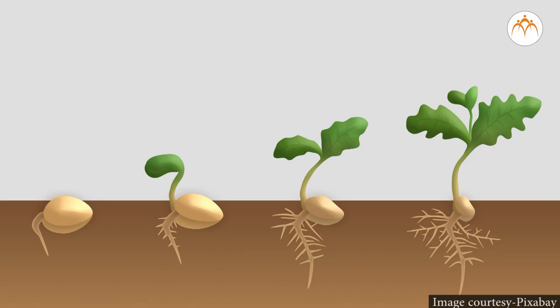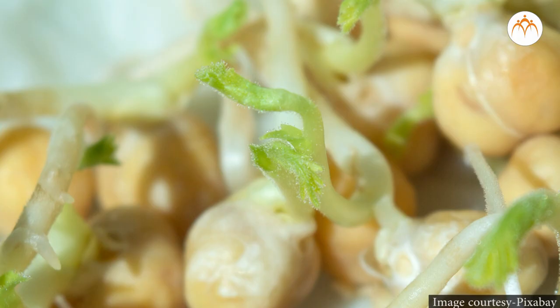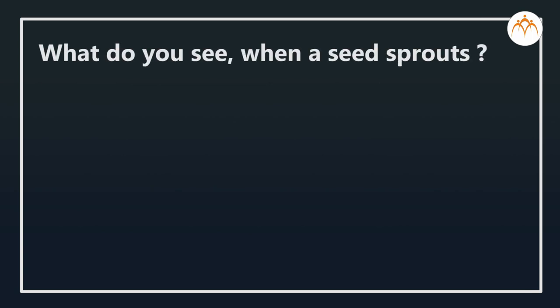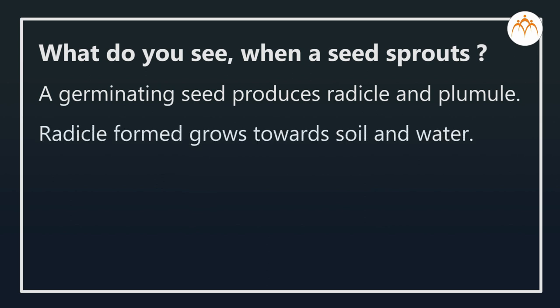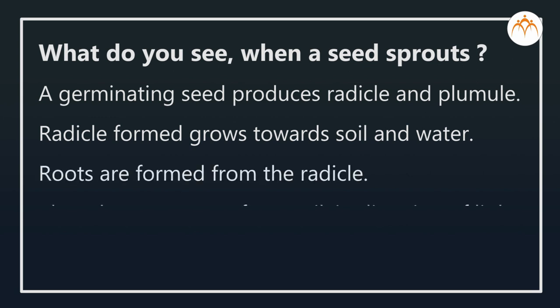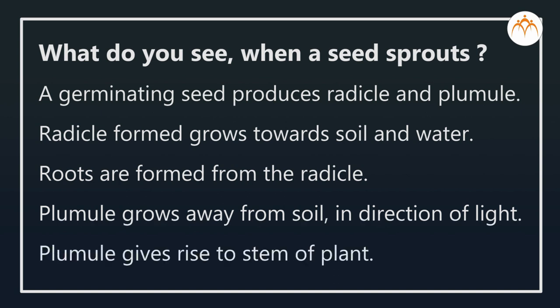On the other hand, your germinating seeds produce an axis that has tiny green leaves in addition to the radicle — this is called the plumule. A plumule grows upwards, away from soil, towards sunlight, and gives rise to the stem of the plant. So when a seed sprouts, a germinating seed produces a radicle and a plumule. The radicle grows towards soil and water to form roots, while the plumule grows away from soil towards light to give rise to the stem.